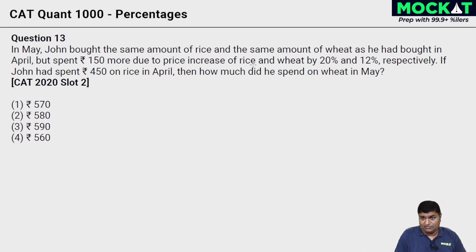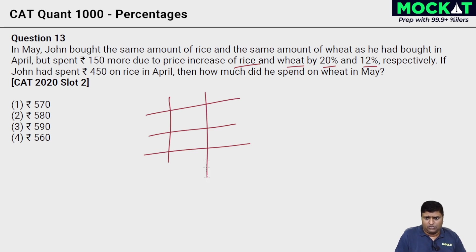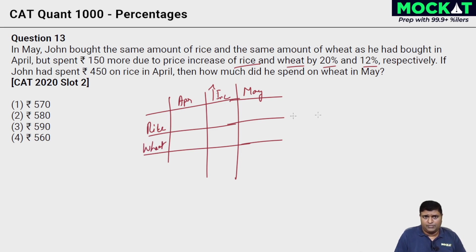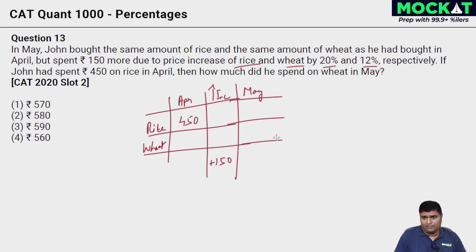In May, John bought the same amount of rice and wheat as in April, but spent Rs. 150 more due to price increases of 20% and 12% respectively. We can draw a table with April and May columns, and rice and wheat rows, with a plus 150 total increase. If John spent 450 on rice in April, how much did he spend on wheat in May?